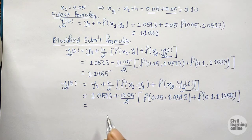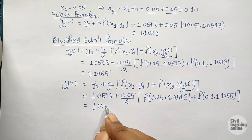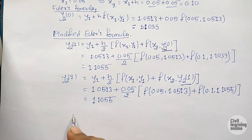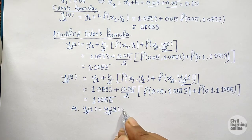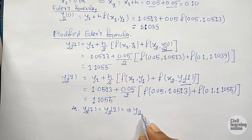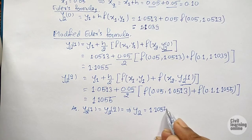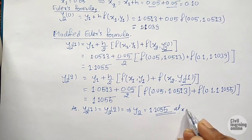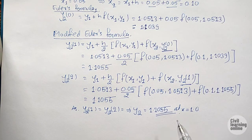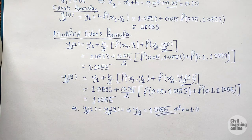On solving we again get 1.1055. Since y₂¹ equals y₂², we have y₂ equals 1.1055, and this is our final answer — the value of y at x equals 0.1. I hope you found this numerical very helpful. See you in the next video on the Runge-Kutta fourth order method. Till then, stay safe and bye!